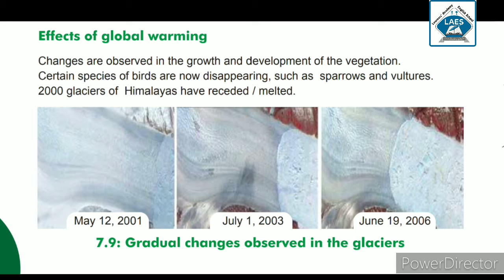The Himalayan glacier has been melting since 2000. You can see picture 7.9 — gradually changes observed in the glaciers. Years are mentioned with the picture. From May 2001 it started to melt, then by July 2003 melting continued, till June 2006 the melting effect is clearly visible. So it is melting — we are still listening to news that the Himalayan glacier is melting due to the effects of global warming.